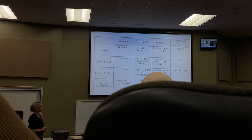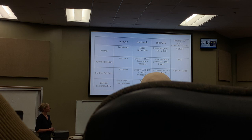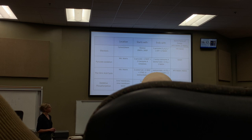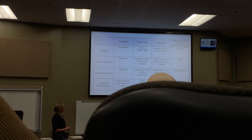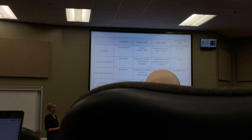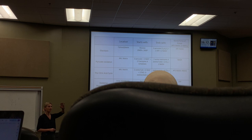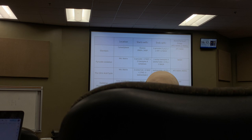Pyruvate oxidation — where is it happening? The mitochondrial matrix, right in the very center. We start with the two pyruvates because that was the product from glycolysis. Here we're going to create NADH, so we need NAD+ as an input or reactant. We also need coenzyme A as a reactant to create acetyl-CoA.